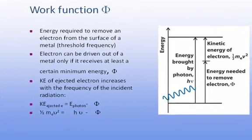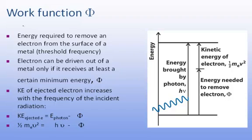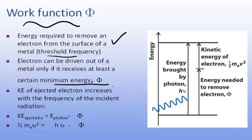This minimum threshold energy is also oftentimes referred to as the work function, which is the energy required to remove an electron from the surface of the metal — it's the threshold frequency. Electrons can be driven out of the metal only if it receives at least that certain minimum energy, the threshold frequency, also called the work function. The kinetic energy of the electrons increases with the frequency of the incident radiation.